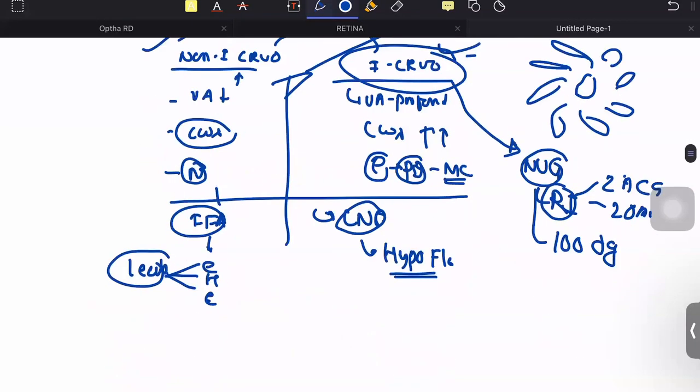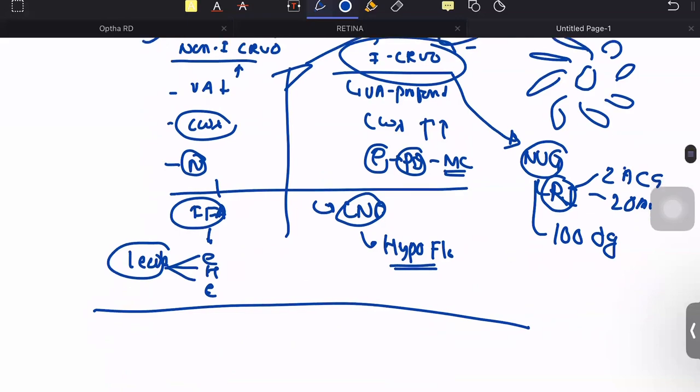How would we go by the treatment? If a patient is suffering from non-ischemic variety, our aim is to prevent it from going into the ischemic variety.